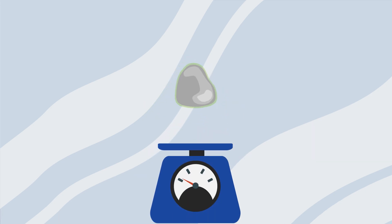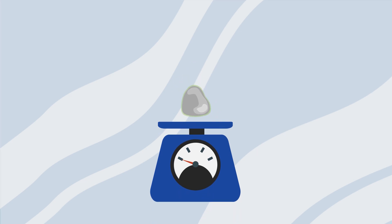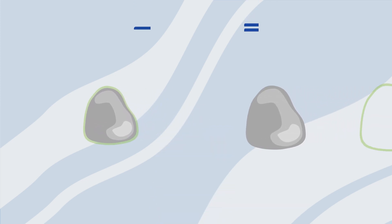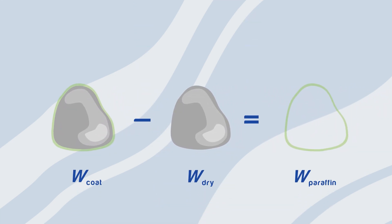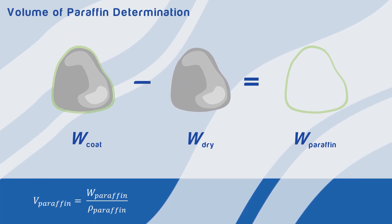Then, we weigh the sample with the paraffin and we will refer to it as W coat. The difference between the two weights divided by the density of paraffin is the volume of added paraffin. This volume will then be subtracted from the final volume calculation.